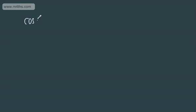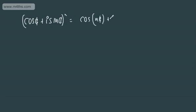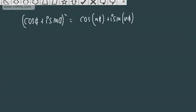In the last video, we used proof by induction to show that De Moivre's theorem held true for a positive integer n. We saw that (cos θ + i sin θ)^n could be written as cos(nθ) + i sin(nθ). Please do watch that if you haven't seen it — this was the end result of De Moivre's theorem.